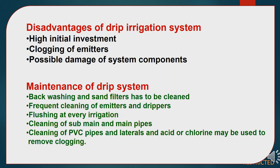Disadvantages of drip irrigation system: There is high initial investment and chances of clogging of emitters and possible damage of system components, requiring maintenance of the drip system. Maintenance includes backwashing and cleaning sand filters, frequent cleaning of emitters and drippers, flushing at every irrigation, cleaning of sub-main and main pipes, cleaning of PVC pipes and laterals, and acid or chlorine may be used to remove clogging.